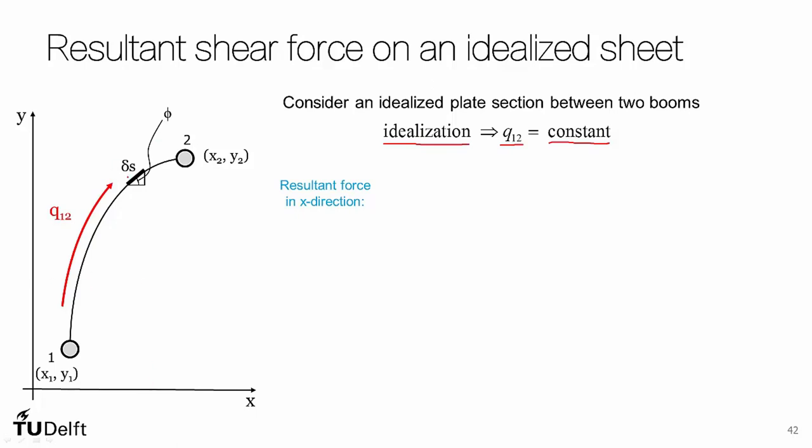The resultant force acting on element delta s will be Q12 delta s, but we want the x component, so we multiply that by the cosine of phi. We get Q12 delta s cosine phi, and we integrate that over the entire segment from 1 to 2. So we get Q12 times delta s, the resultant on our element, multiplied by cosine phi, integrated from boom 1 to boom 2.